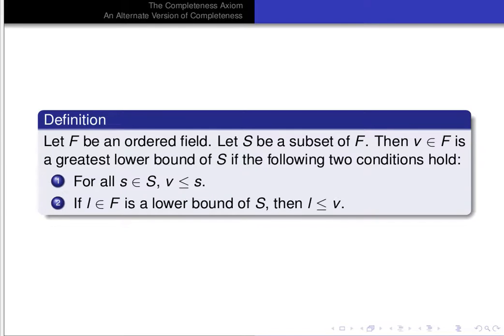We want to define what it means for something to be a greatest lower bound. It has two conditions: it's a lower bound, and it's the greatest of all lower bounds. So let F be an ordered field and S a subset of F. Then V in F is a greatest lower bound of S if: first, for all s in S, V is less than or equal to s — meaning V is a lower bound — and second, if L is a lower bound of S, then L is less than or equal to V, so V is the largest of all lower bounds.